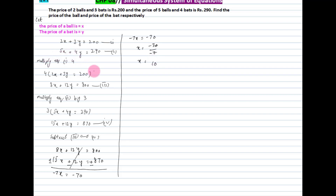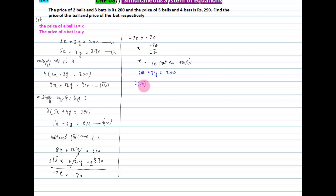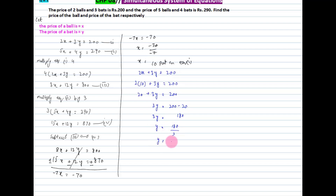Now that we have found x, we put this value into equation 1 to find y. Equation 1 is 2x + 3y = 200. Substituting x = 10: 2(10) + 3y = 200 → 20 + 3y = 200. So 3y = 200 - 20 = 180, and y = 180 / 3 = 60.